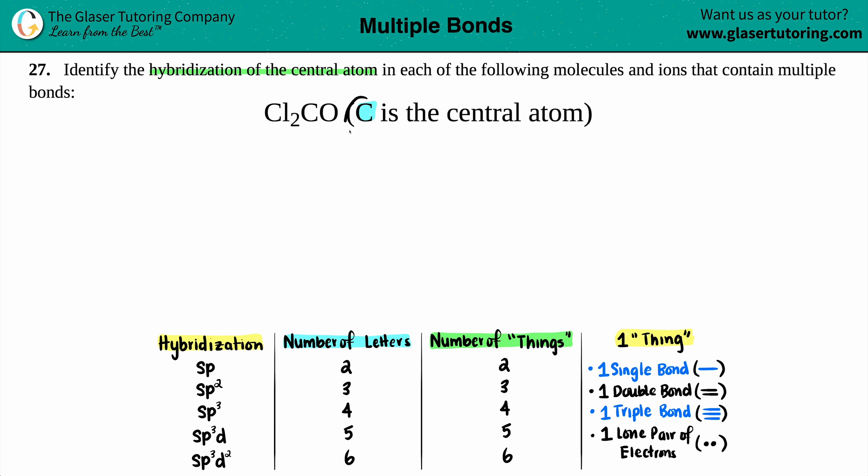Since they told us that the carbon is the central atom, I'm just going to draw carbon in the middle. It seems like all the other elements are surrounding that carbon. So I have two chlorines and one oxygen. It does not matter how you put your chlorines or oxygen, they just have to be around the carbon. So I'll put the two chlorines down here, Cl and Cl, and I'll put the oxygen up top.